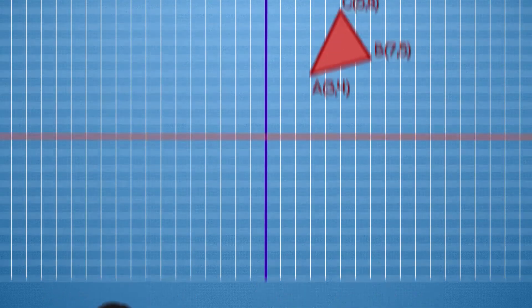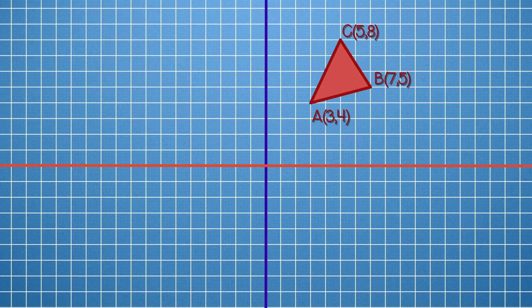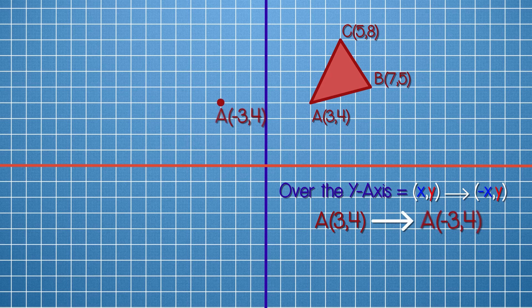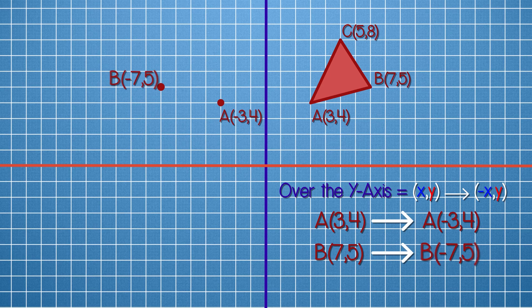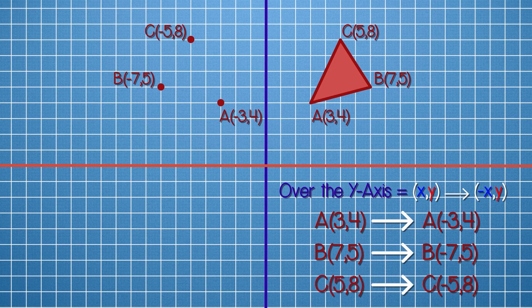Let's try reflecting triangle ABC over the y-axis. Remember, all the x-values should change signs. Vertex A (3, 4) becomes (−3, 4). Vertex B (7, 5) becomes (−7, 5). And vertex C (5, 8) becomes (−5, 8). And there you have it — triangle ABC reflected over the y-axis.